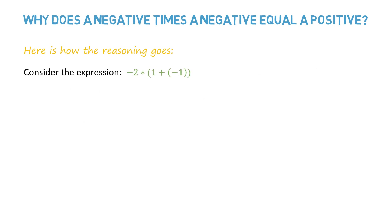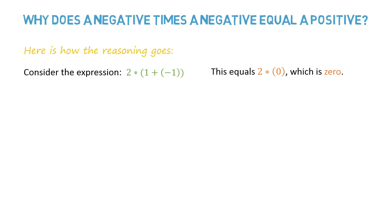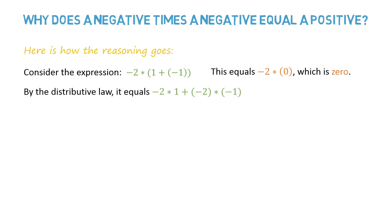Now consider the expression: the product of minus 2 and 1 plus minus 1. This equals minus 2 times 0, which is 0. Using the distributive law, we can write this expression as minus 2 times 1, plus minus 2 times minus 1.